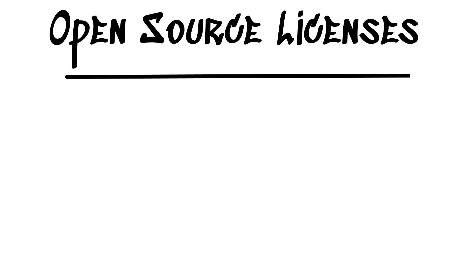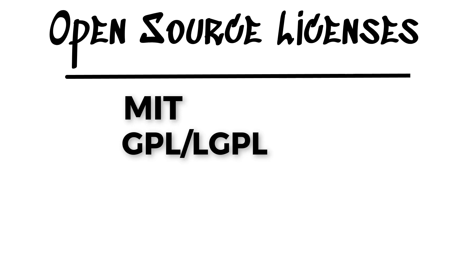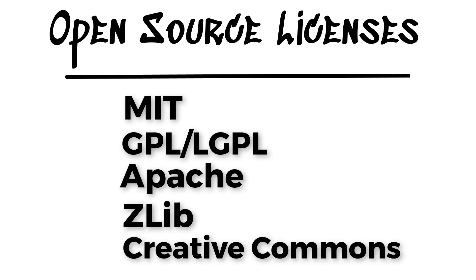Possibly not the most interesting subject you've ever seen, but definitely one that has some value. The licenses we're going to look at today specifically are the MIT license, the GPL, LGPL license, the Apache license, the Zlib license, and the Creative Commons license. And we're going to use a site called TLDR Legal for quick, basically plain-English summaries to describe each of those licenses in turn.